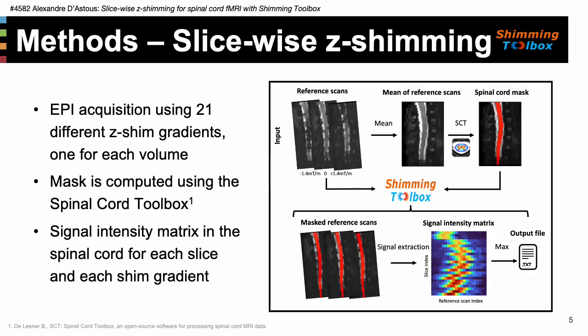More precisely, we used a custom EPI sequence developed by Jürgen Finsterbusch's group in Hamburg to acquire a scan consisting of 21 different volumes, each acquired with different z-shim gradients ranging from −21 mT/m to +21 mT/m. We chose z-gradients as they are expected to provide the most benefit. The mean of those 21 EPI volumes was computed to help the segmentation of the spinal cord, which was performed automatically by the spinal cord toolbox.